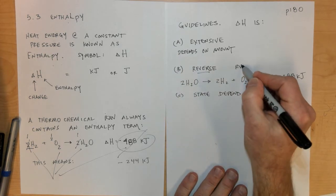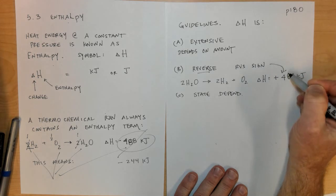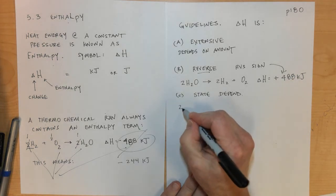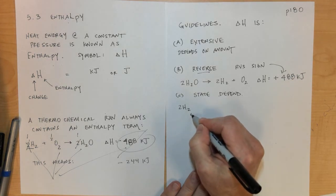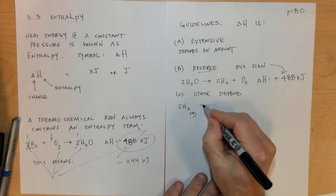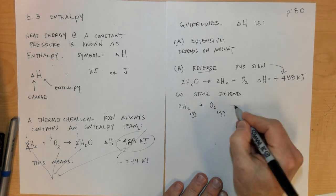Lastly, enthalpy is state dependent, which means it depends on the state of matter that a substance is in at that time. Our reaction assumes that hydrogen is in its gaseous state, oxygen is in its gaseous form, and water is in its standard liquid form.